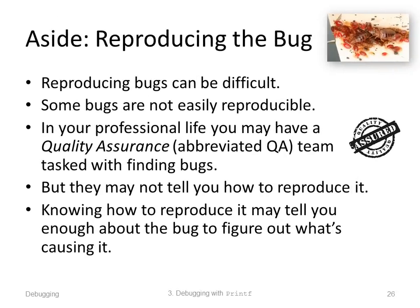Reproducing bugs can be very difficult. In your professional life, once you become a professional programmer, you may have a quality assurance team — abbreviated QA — tasked with finding bugs. They're trained to do that; they have automated tools and in general do a good job. But they may not tell you how to reproduce the bug — they may just say, 'Oh, we found it. Here's what it looks like.' Knowing how to reproduce the bug tells you enough to figure out what's causing it, so you can test if you fixed it. QA may tell you about the bug, but figuring out how to reproduce it may be in your hands.